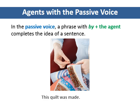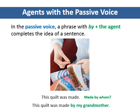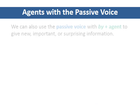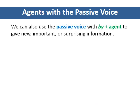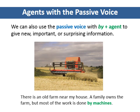Read this example. In this sentence, the idea is not finished. Anyone might make a quilt, so the agent is not obvious. In this case, we need to include the agent in a by-phrase so the meaning is complete. We can also use the passive voice with by plus an agent to give new, important, or surprising information. Read this example. In this sentence, the information that machines do the work is important. The point of the sentence is to make it clear how most of the work is done.